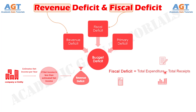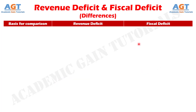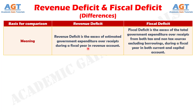Let's look into the basic differences between revenue deficit and fiscal deficit in a tabular form. Difference number 1: Revenue deficit refers to the gap between government revenue expenditure and government revenue receipts, whereas fiscal deficit implies the gap between total expenditure and total non-debt receipts of the government.